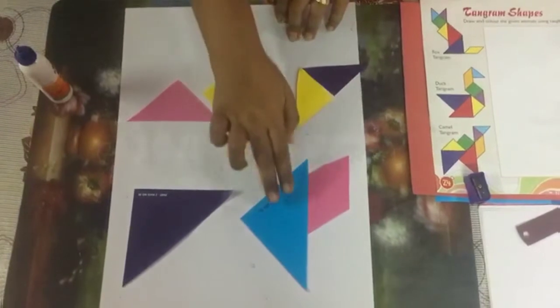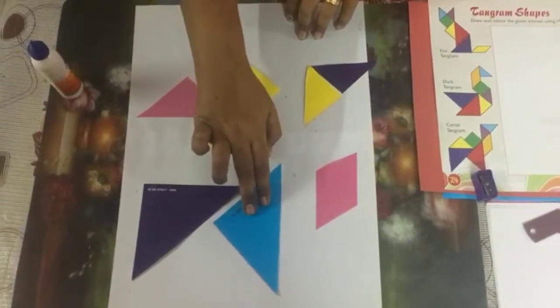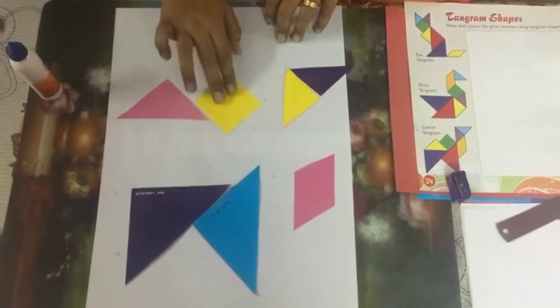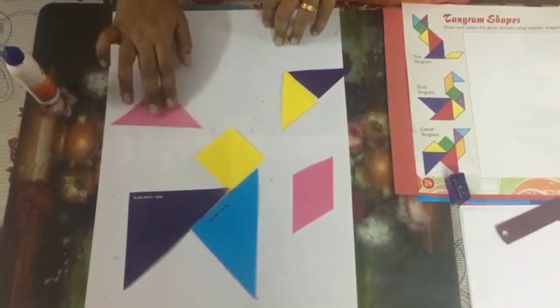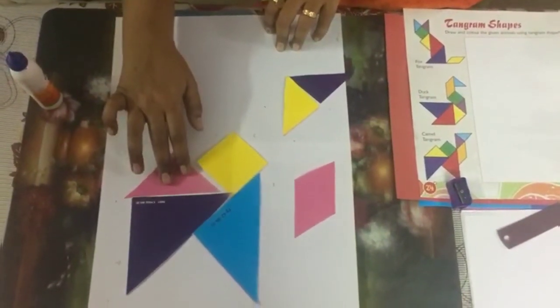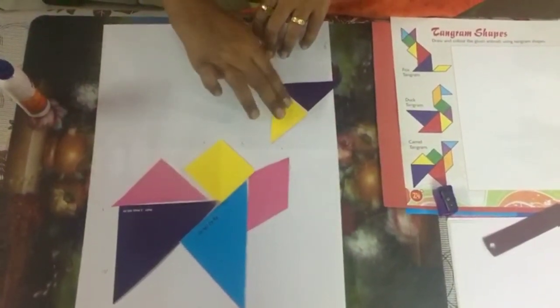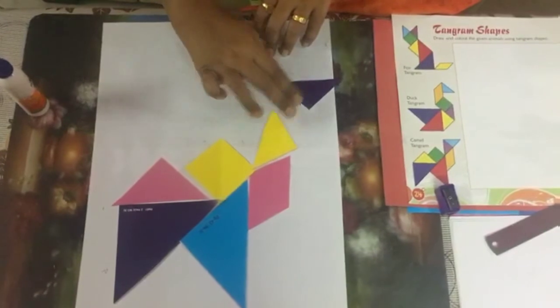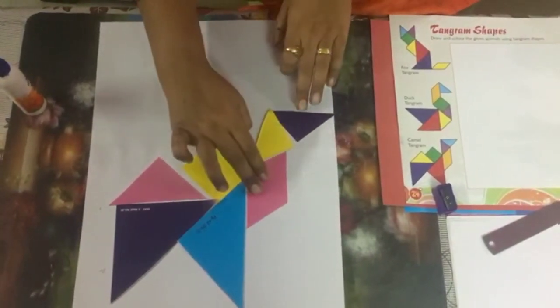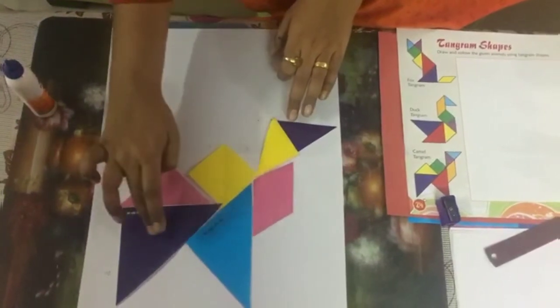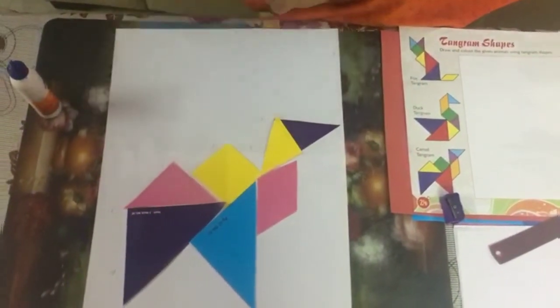Let's make a camel. We will place the triangle like this, vertically. Then the second triangle. Then will come this square. Here will come another triangle, the parallelogram, and here will come the neck of the camel. So here our camel is ready.